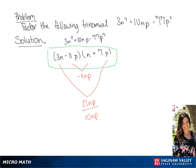So the solution to this problem is 3n minus 11p times n plus 7p. Thank you.